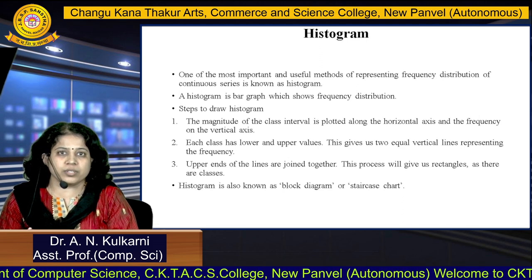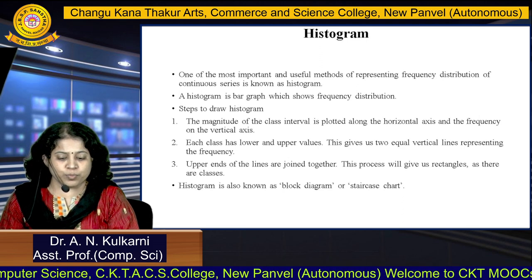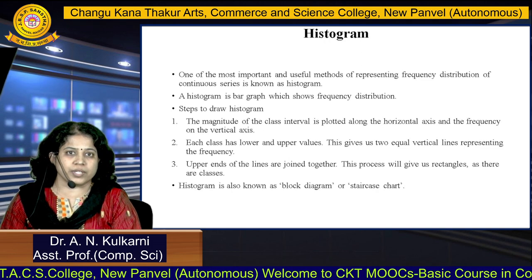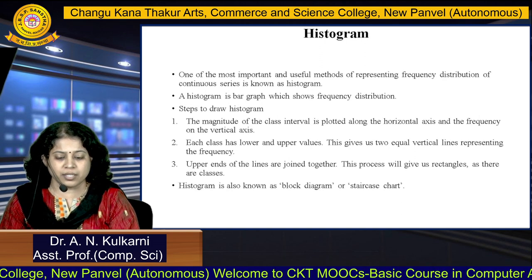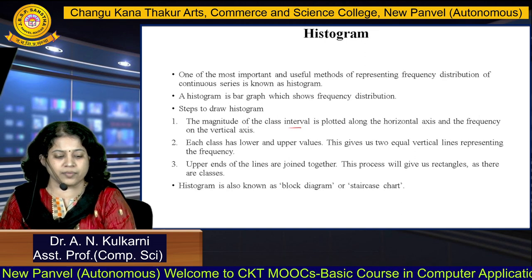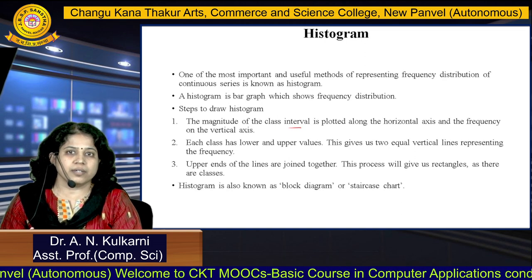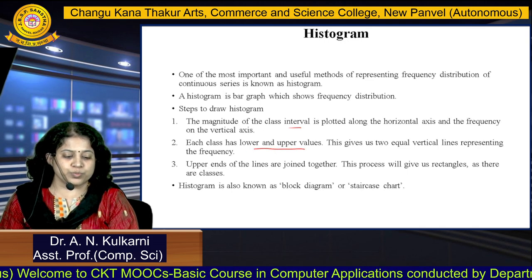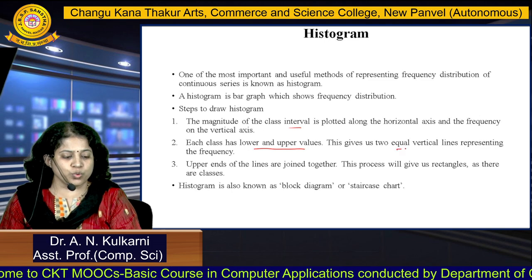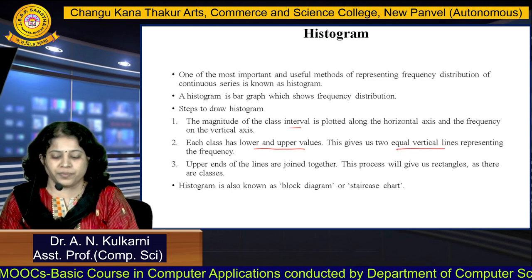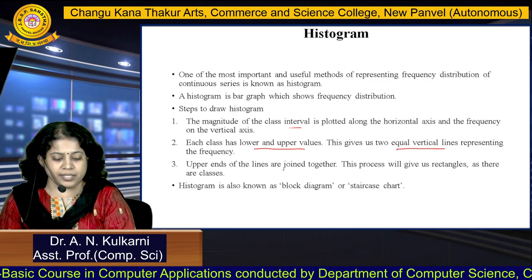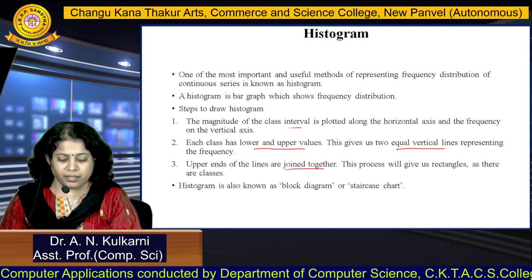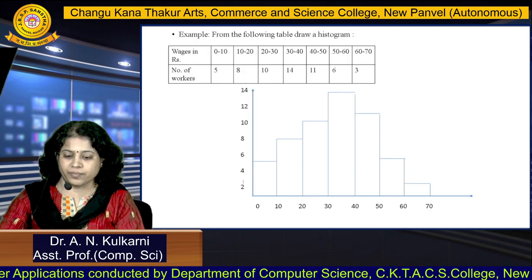Steps to draw the histogram: the magnitude of the class interval is plotted along the horizontal axis and frequency on the vertical axis. So on the horizontal axis we have class interval, and frequency on the vertical axis. Each class has a lower and upper value, giving two equal vertical lines corresponding to the frequency. The upper ends of these lines are joined together so that it forms a rectangle. See here the histogram.